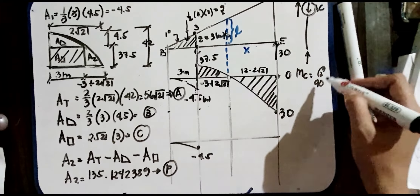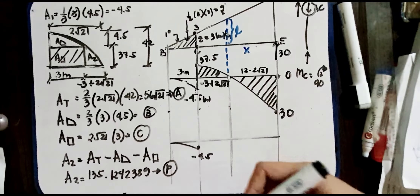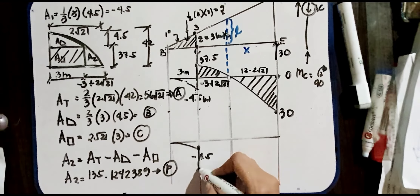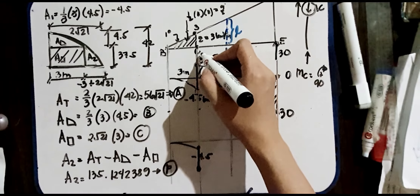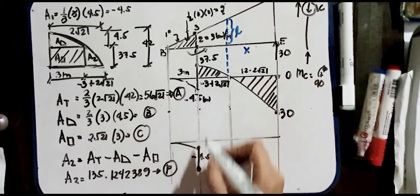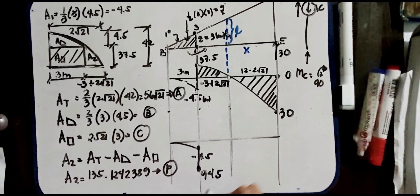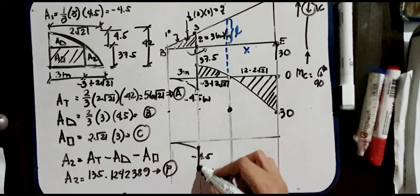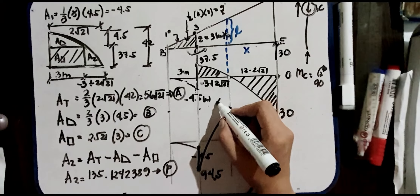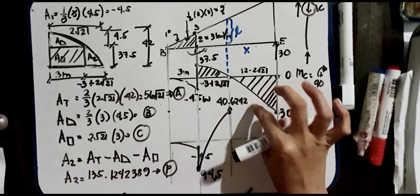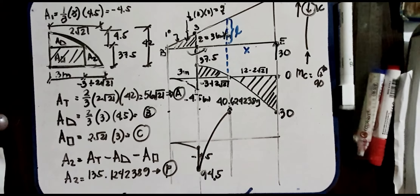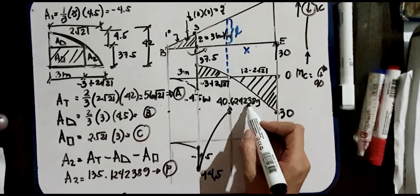Since the moment at C is 90 kN·m clockwise, on this member it becomes counterclockwise. Adding 4.5: 90 + 4.5 = 94.5 kN·m. Then 94.5 minus F (135.1242389) gives approximately 40.624238. So A3 = 80 − 40.624238, resulting in equivalently 0, confirming the moment diagram closes.